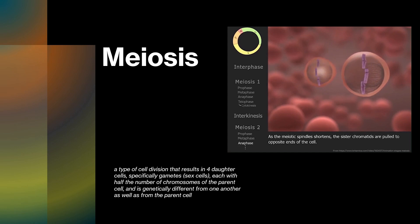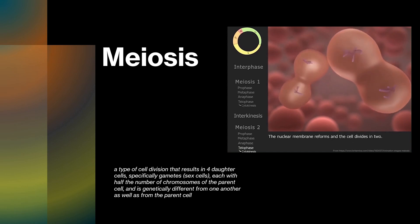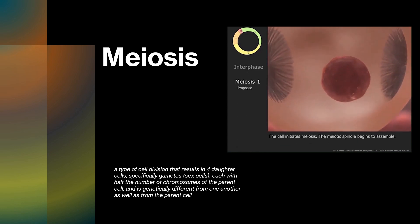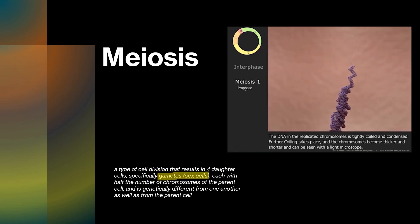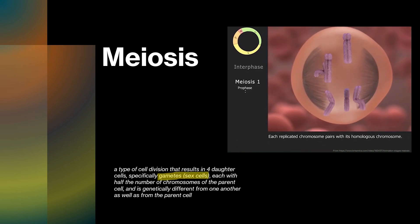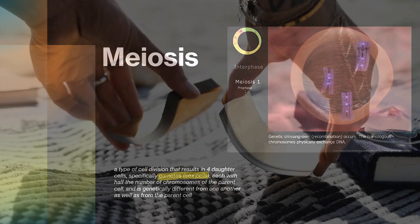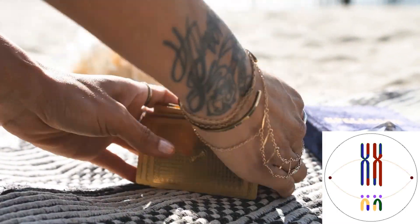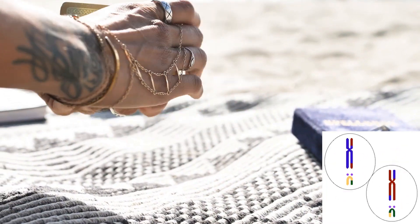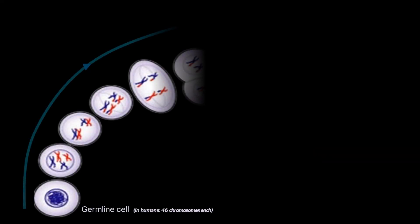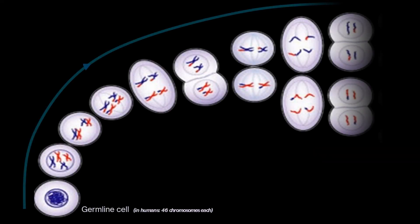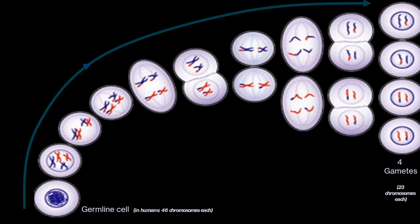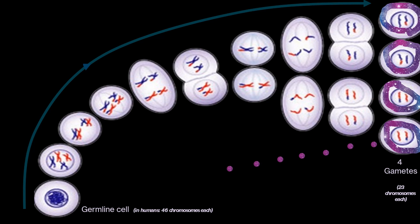Meiosis is how we produce sperm and egg cells — gametes. Meiosis is somewhat like nature's amazing way of shuffling a deck of genetic cards to create unique offspring. It's a special type of cell division that reduces the number of chromosomes in a cell by half, resulting in four new daughter cells, each with a unique set of chromosomes.